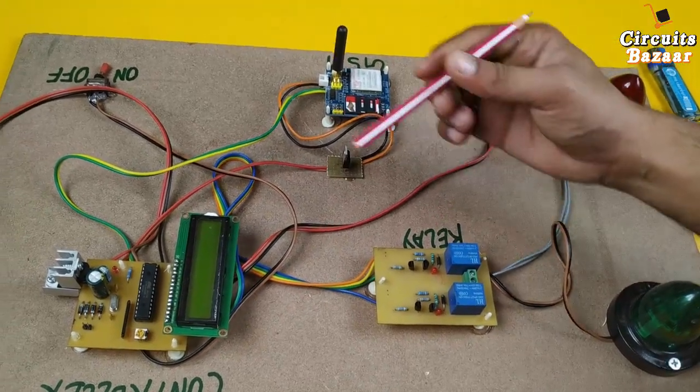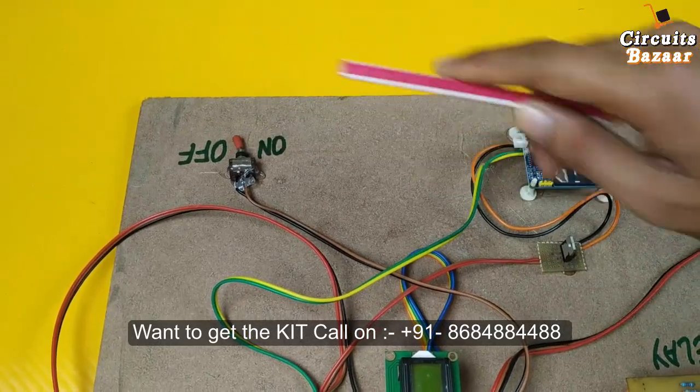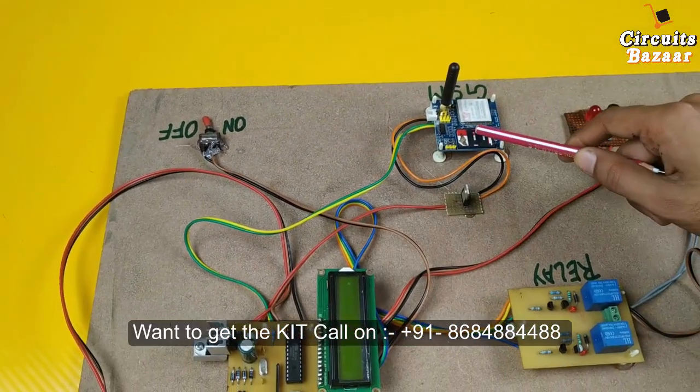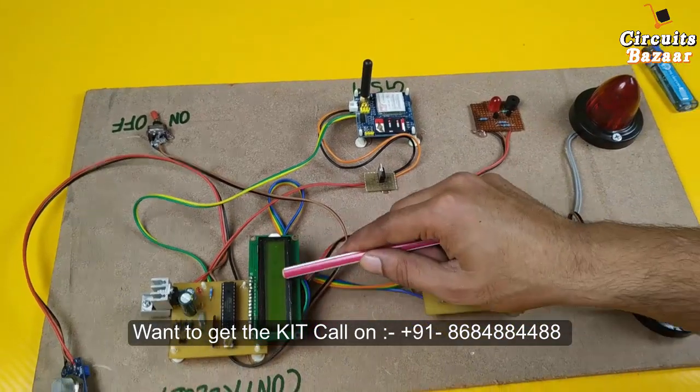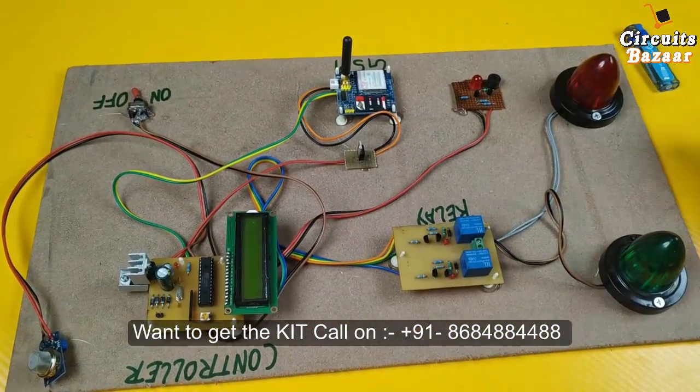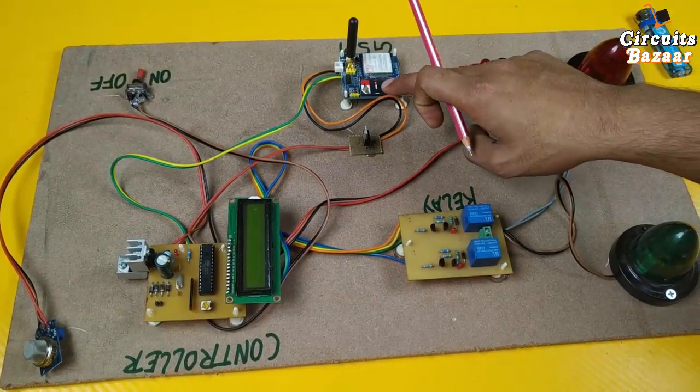This on/off toggle button - whenever you press this off, it means it won't send the message and won't turn on the indicator as well. It will just show the number of pollutions on the LCD. But whenever you turn it on, then it will send the message as well and it will turn on the indicator as well.